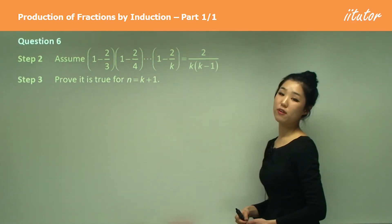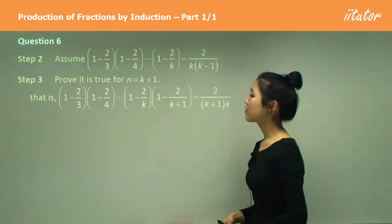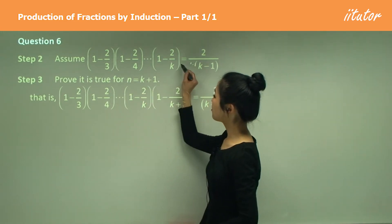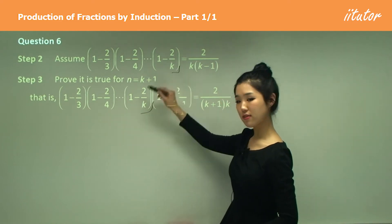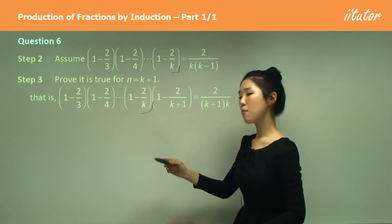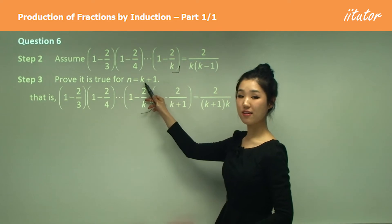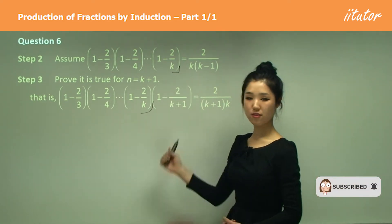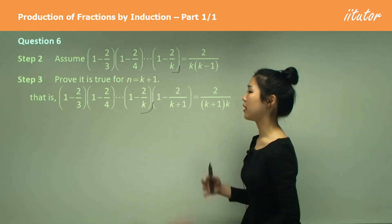We want to prove it's true for n equals k plus 1. It's going to look like this. So up to here, up to here, it's the same as what we've done in the assumption which is n is just k. But because we're adding an extra 1 to n, so it's going to be n equals k plus 1, we have another term added to it or multiplied to it.